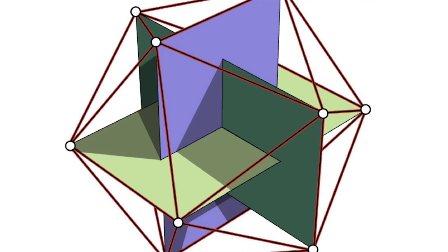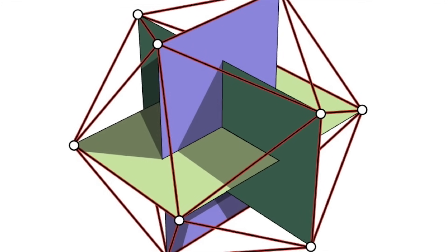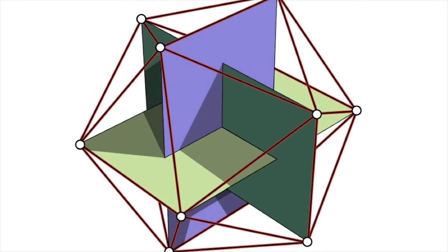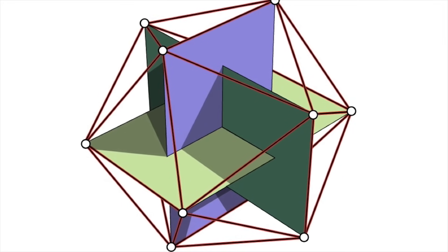Moving to three dimensions, three orthogonal golden rectangles can be constructed with the twelve vertices of a regular icosahedron.